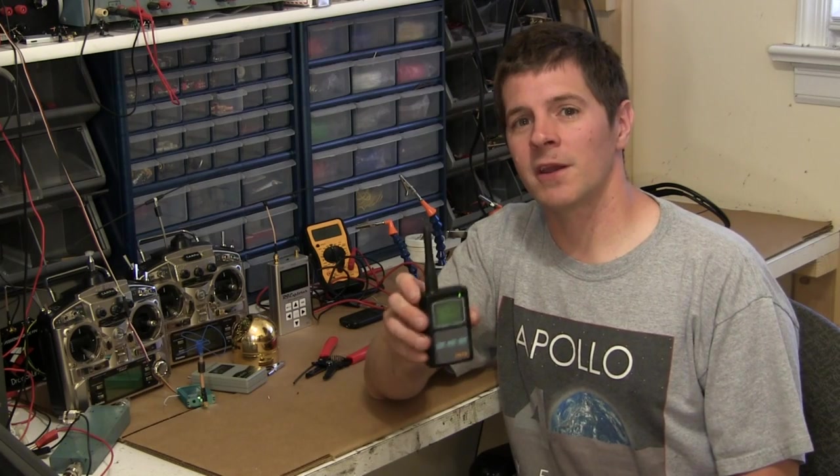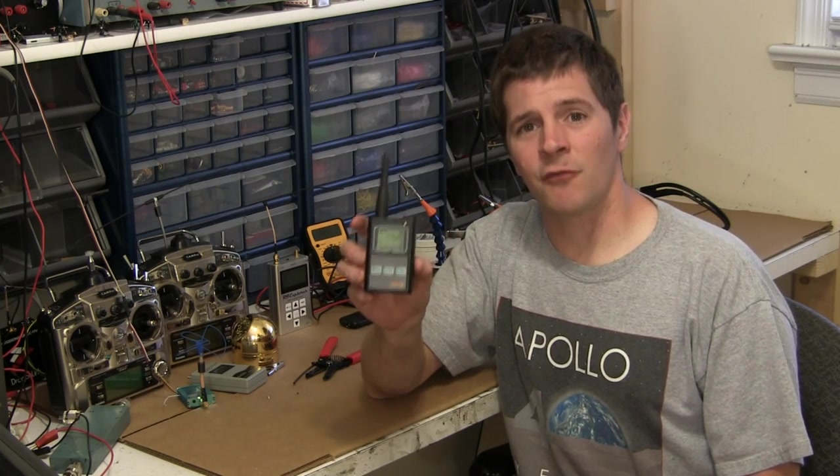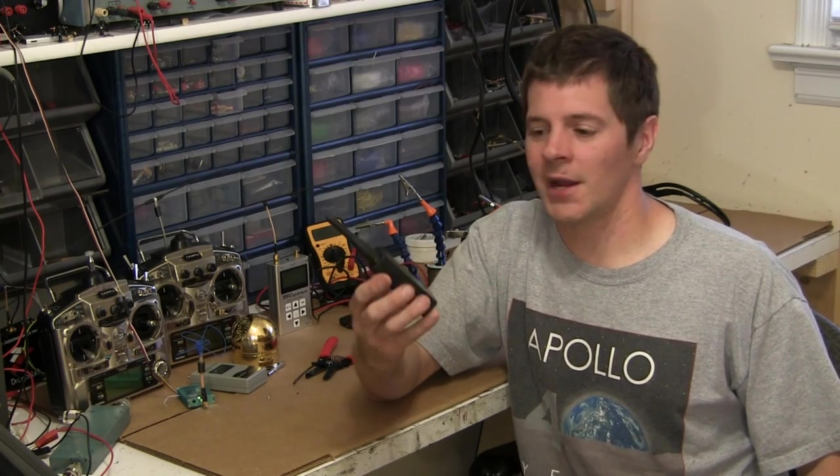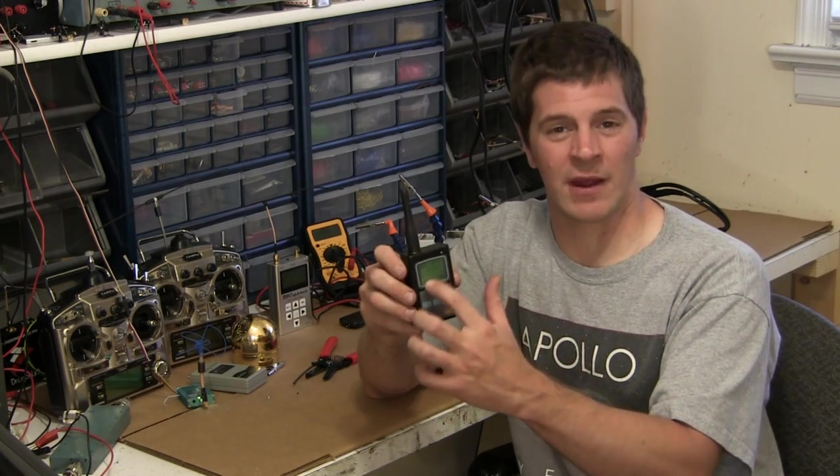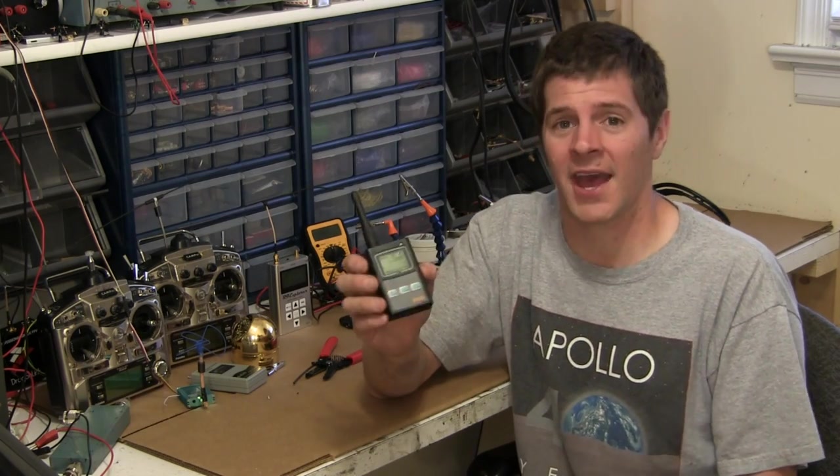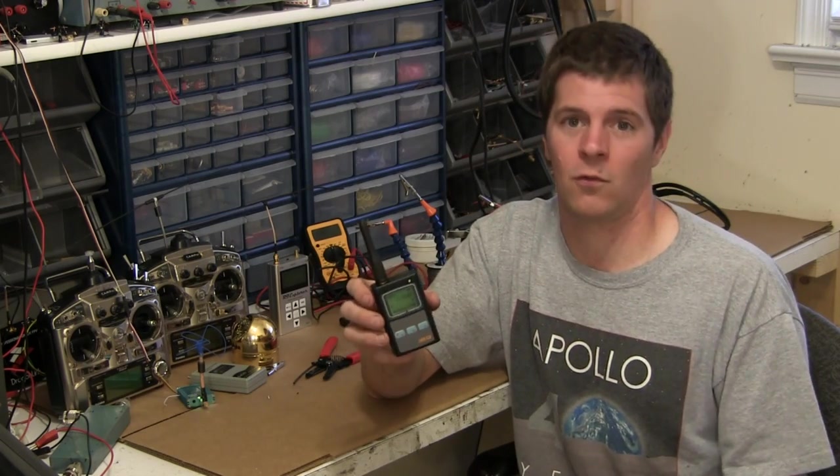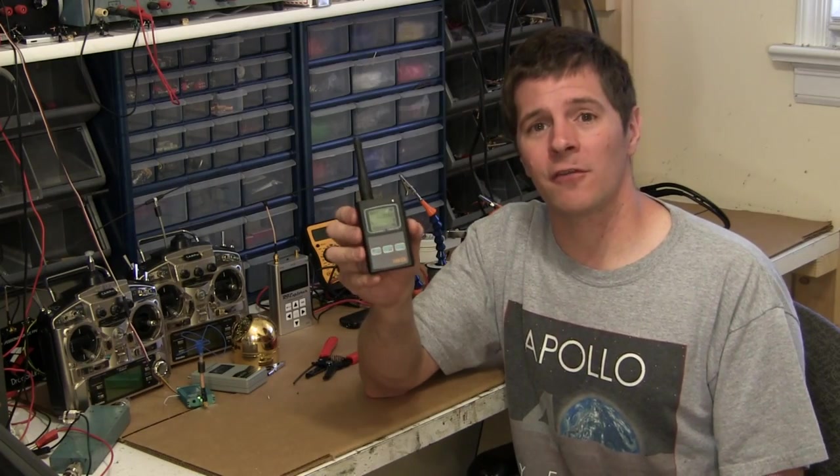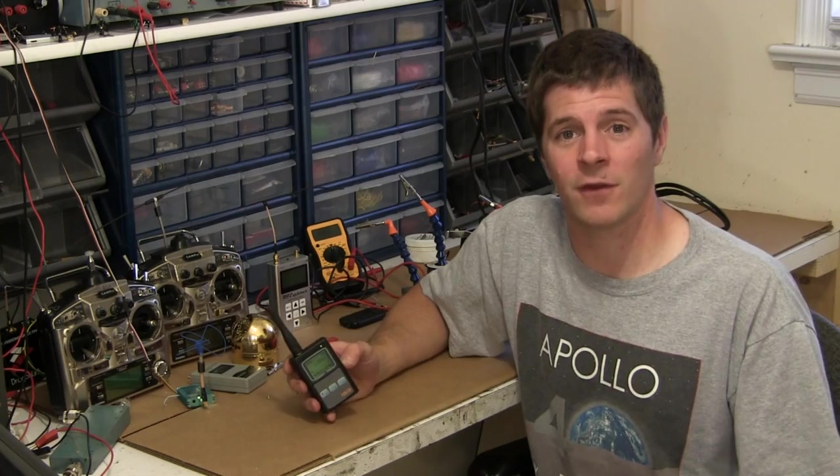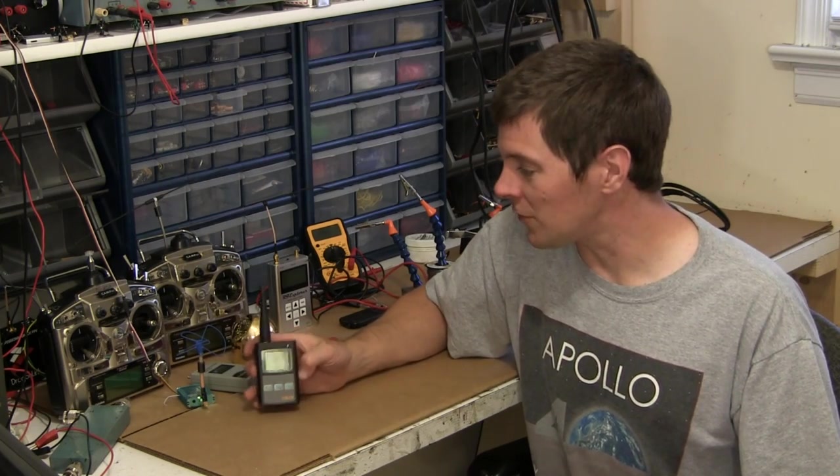Another device you might want to consider obtaining is a frequency counter. A frequency counter simply tells you the frequency of the strongest device near it. And some of them have a little signal strength meter to give you an idea about how much transmit power is coming out. They're not very accurate, but good enough for quick tests. All you do is turn on your frequency counter and turn on whatever device you want to see the frequency on and put it up close and it will read the frequency.